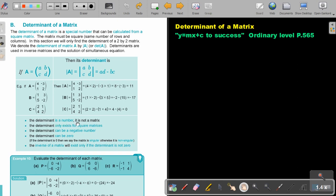Now, the determinant is a number. It's not a matrix. So a single number. The determinant only exists for square matrices.